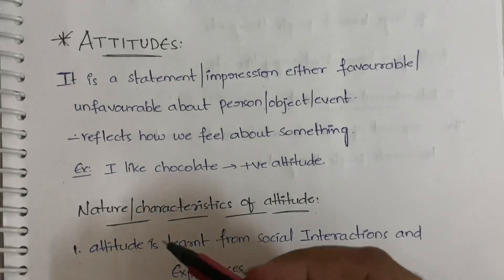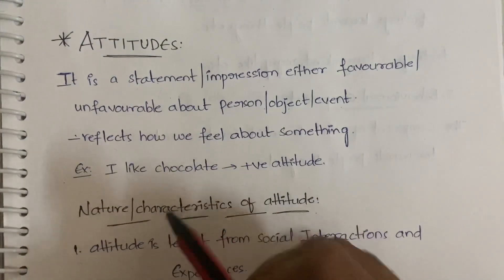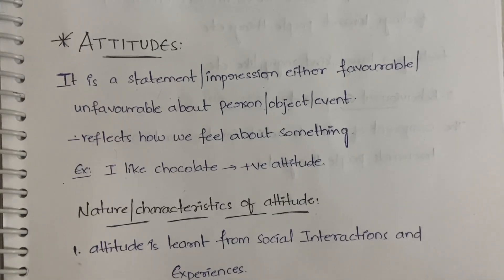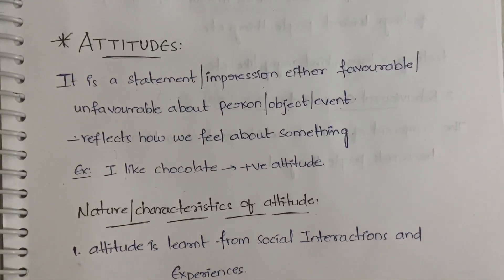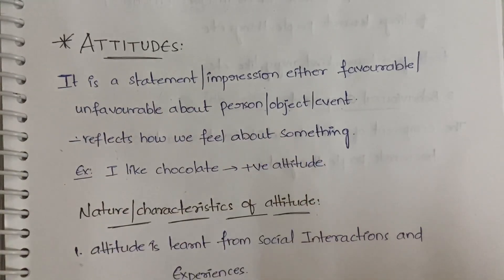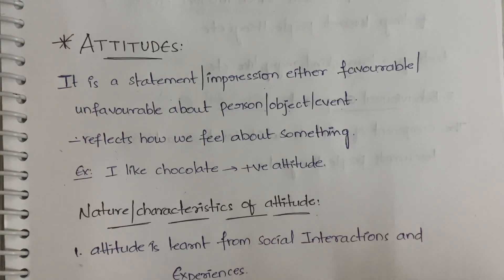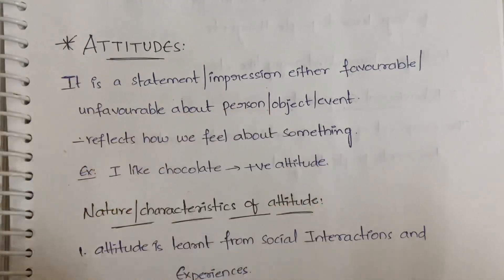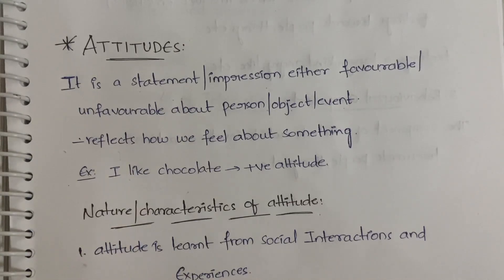For example, if you say 'I like chocolate,' you are expressing a positive attitude towards chocolate. If you say 'I hate bitter gourd,' that is a negative attitude — you have a negative opinion about bitter gourd. Attitude reflects how we feel about something — whether we like it or hate it, want it or don't want it. It is a statement, opinion, impression, or feeling you form on a particular thing, and that opinion could be positive or negative.